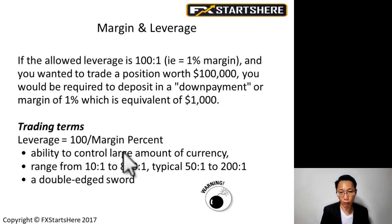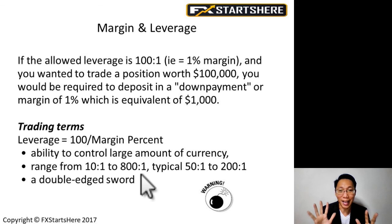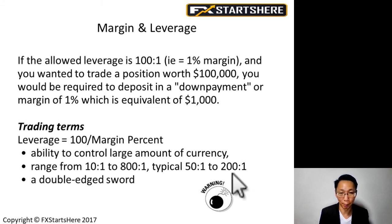In trading terms, leverage equals 100 divided by margin percent — it's the ability to control a large amount of currency. Leverage ranges from 10:1 to 800:1. At 800:1, for every one thousand dollars you could trade up to eight hundred thousand dollars — the leverage is just too high. Typically, most traders use leverage of 50:1 to 200:1.